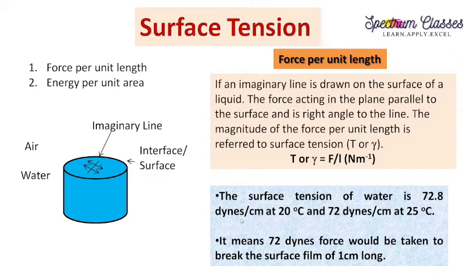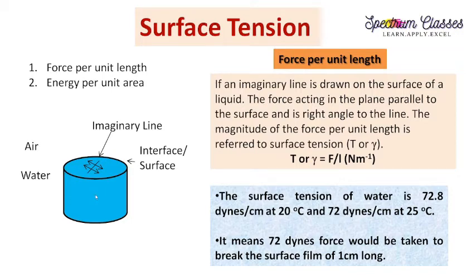For water, the surface tension is 72.8 dynes/cm at 20°C and 72 dynes/cm at 25°C. From this we infer that surface tension decreases with increasing temperature, because on increasing temperature the kinetic energy of molecules increases, so the surface tension decreases. It also depends on impurities present in the water and on the medium outside the surface.